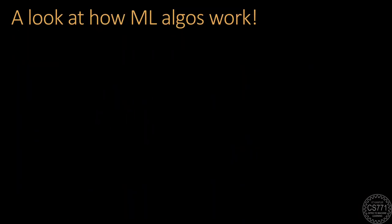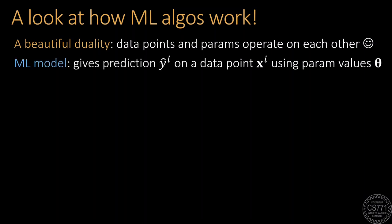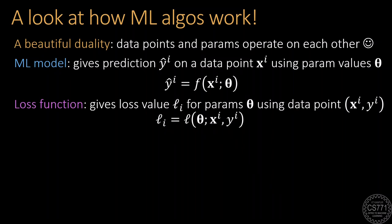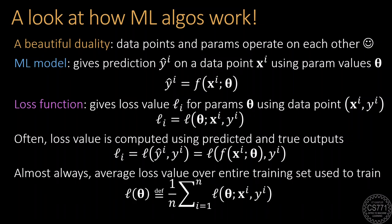Now before moving forward I would like you to take a pause and appreciate this beautiful duality in this system where data points and parameters are really evaluating each other. So a machine learning model takes as input a data point and gives an output by using the parameter values whereas the loss function takes the parameter values as input and gives a loss value by using a data point really as a parameter. So for the loss function the roles are flipped. The parameters become the input and the data point really becomes the parameter. It's most popular to compute this loss value using the predicted and the true outputs and it's also very common to use the average loss value over the entire training set to evaluate whether a set of parameters is good or bad.